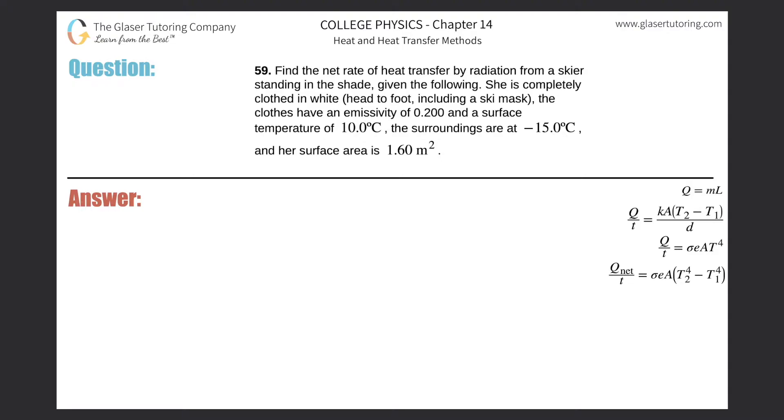Number 59: Find the net rate of heat transfer by radiation from a skier standing in the shade. Given the following: she's completely clothed in white head to foot. The clothes have an emissivity of 0.2 and a surface temperature of 10 degrees Celsius. The surroundings are negative 15 degrees Celsius, and her surface area is 1.6 meter squared.